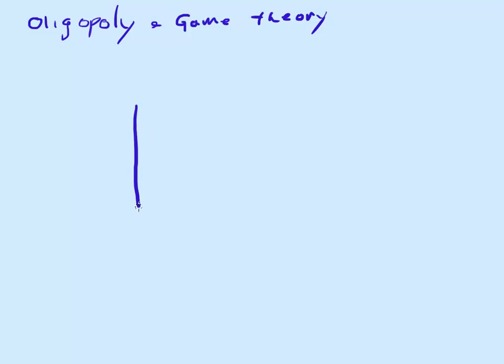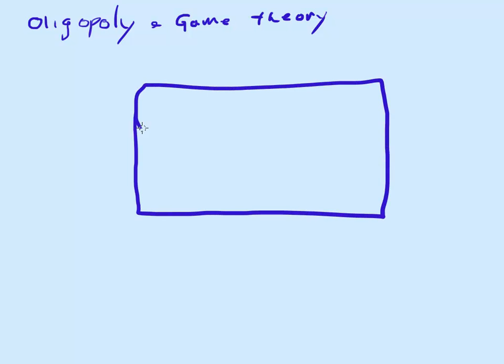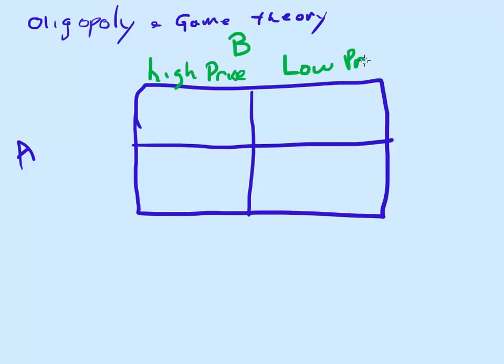Let's look at this in terms of firms. Let's create a matrix here. Let's say we have two firms - firm A over here and firm B up here. Let's say they have two possibilities. Firm B can have a high price or they can have a low price.